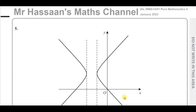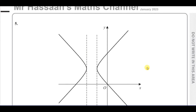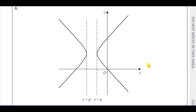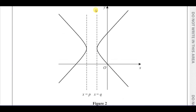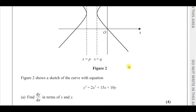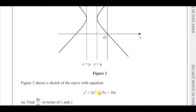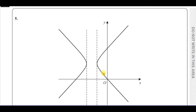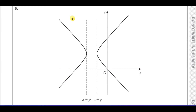Welcome back, this is Mr. Hassan's Math Channel. This is question number 5 from the January 2023 International A-Level Edexcel Pure Mathematics P4 paper. We have a question about this curve, which is a weird-looking curve. It seems to have two sections where it has a limit of its domain — it doesn't have any x values between those values. It says y squared equals 2x squared plus 15x plus 10y. That is the equation of this graph. It's not a function because we see that it's one-to-many.